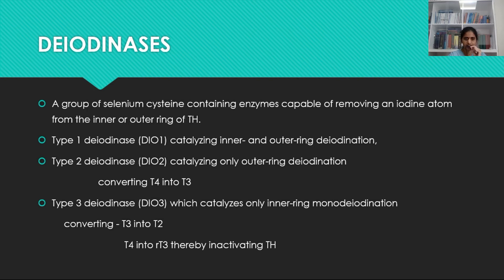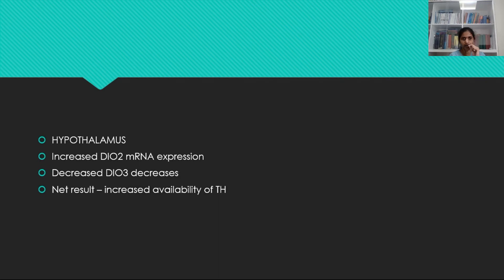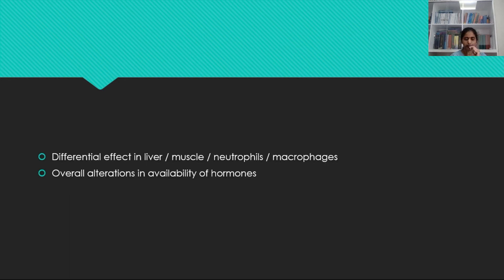Increased expression of type 3 deiodinase results in decreased bioavailability of the active hormone. In the hypothalamus, deiodinase 2 expression will be increased and type 3 enzyme will be decreased, so overall this results in increased bioavailability of thyroid hormone. Coming to liver, muscle, neutrophils and macrophages, there will be differential operations in terms of acute and chronic illness — sometimes deiodinase type 2 will be increased, sometimes it can be decreased. Overall, the net result is that the bioavailability of the hormone will be altered in all these organs.